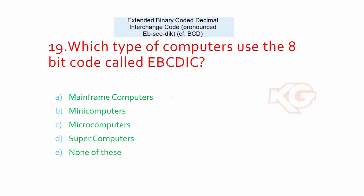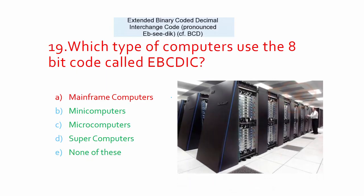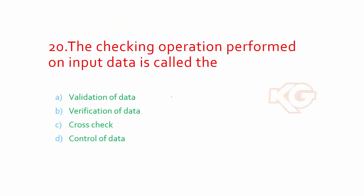You can see the image of how it shows. This is the latest generation mainframes, but mainframes do exist from earlier versions. The checking operation performed on input data is called? Validation, verification, cross check, or control of data. In this case, it should be validation of data, option A.